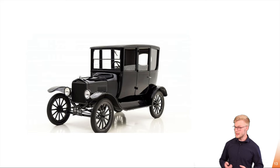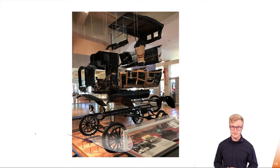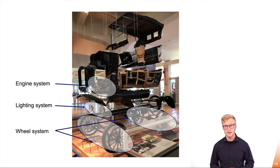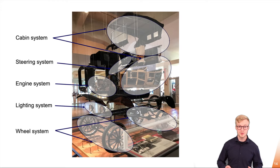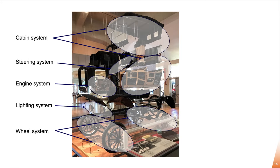Now it's a bit easier. Now we clearly see that we have a wheeling system, we have a lighting system, we have an engine system, a steering system, and also a cabin system which consists of actually two systems — over cabin and under cabin. Now we have identified the five main systems of our car.